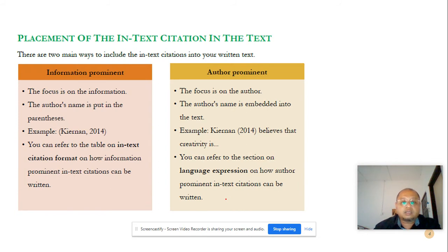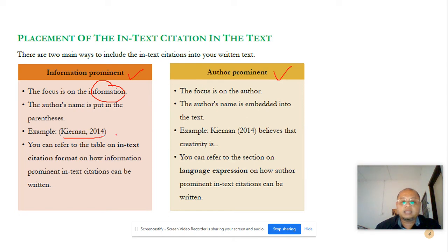Now, regarding the placement of in-text citations in the text: when writing in-text citations, you can consider the prominence of each piece of information. You can go for either information-prominent or author-prominent style. For information-prominent, the focus is on the information and the author's name is placed in parentheses. For author-prominent, the focus is on the author and the author's name is embedded into the text, with the year of publication in brackets. You can refer to the section on language expression for how author-prominent citations are written, and refer to the table on in-text citation format for how information-prominent citations are written.